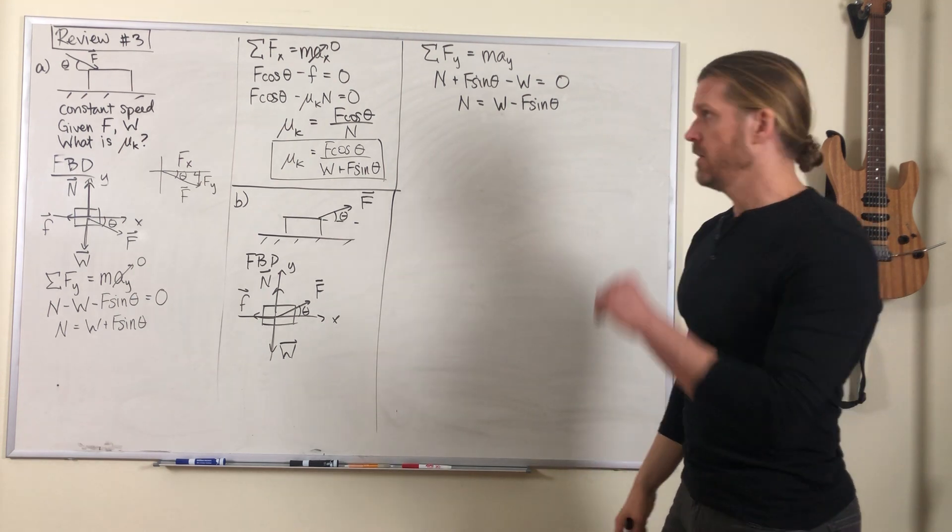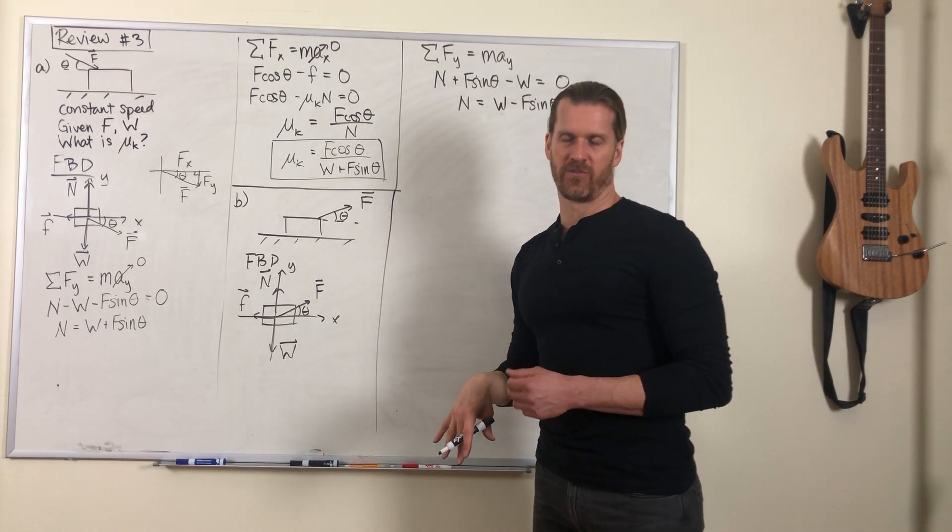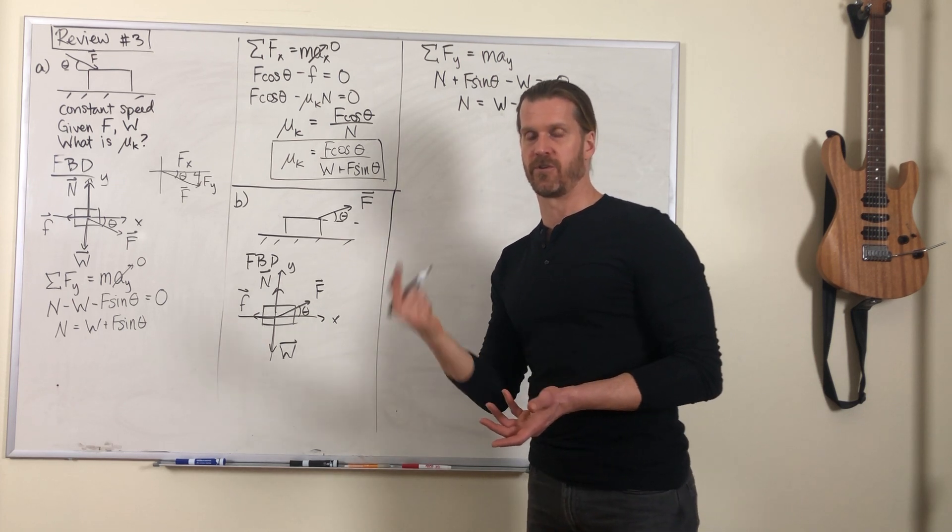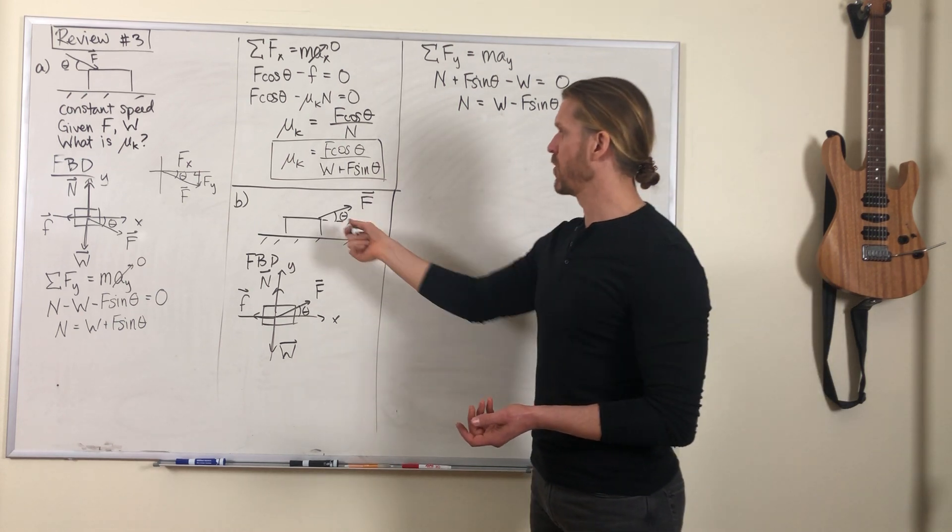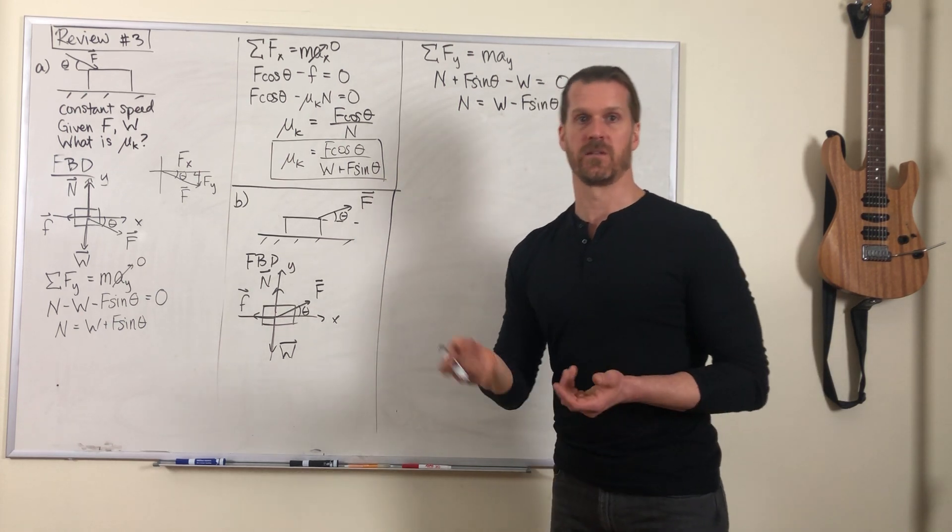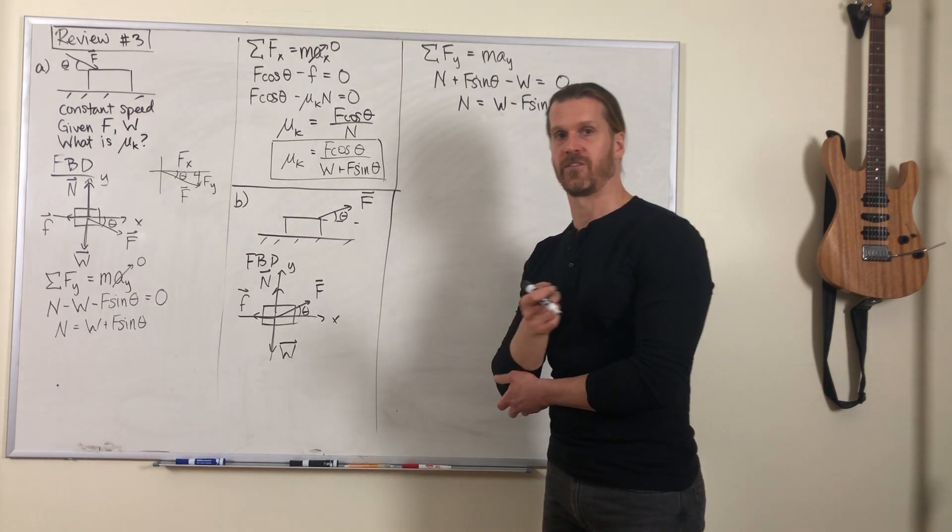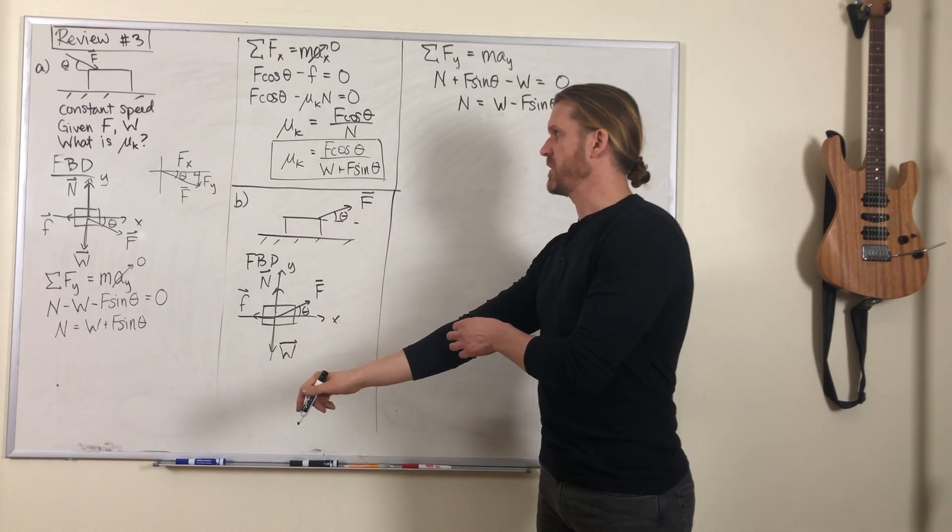The normal force in part a, we're pushing down on that box a little bit, which means the ground has to support not only the box's weight but also your push. In part b, we're kind of lifting it up a little bit, so the ground doesn't have to support as much force. It doesn't have to apply as much normal force to the box in part b.